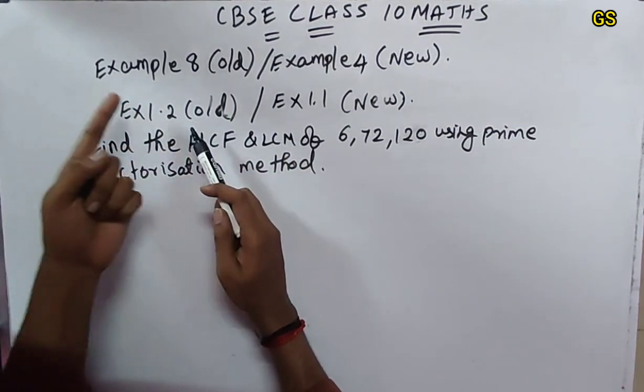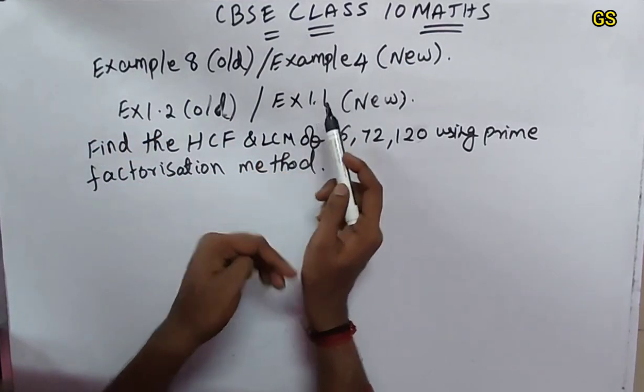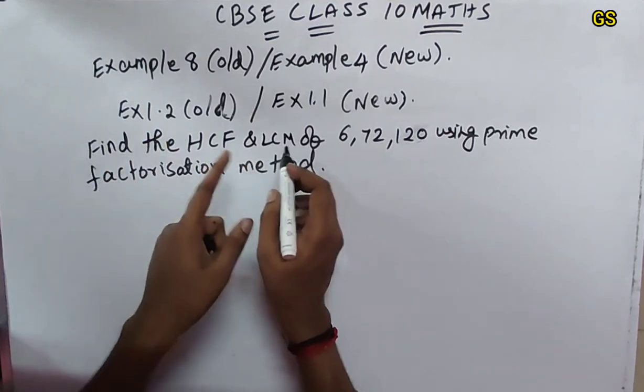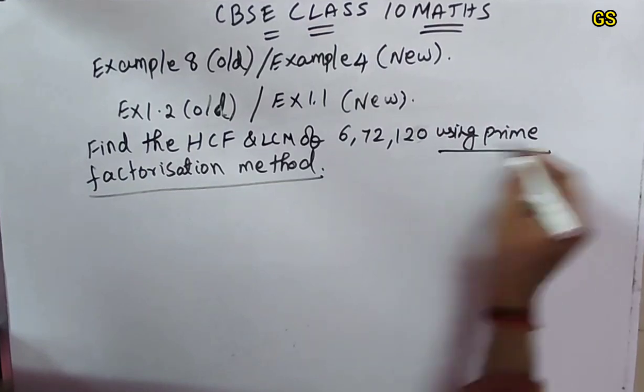That is Example 8. The new edition book is Exercise 1.1, Example 4. Find the HCF and LCM of 6, 72, 120 using prime factorization method.